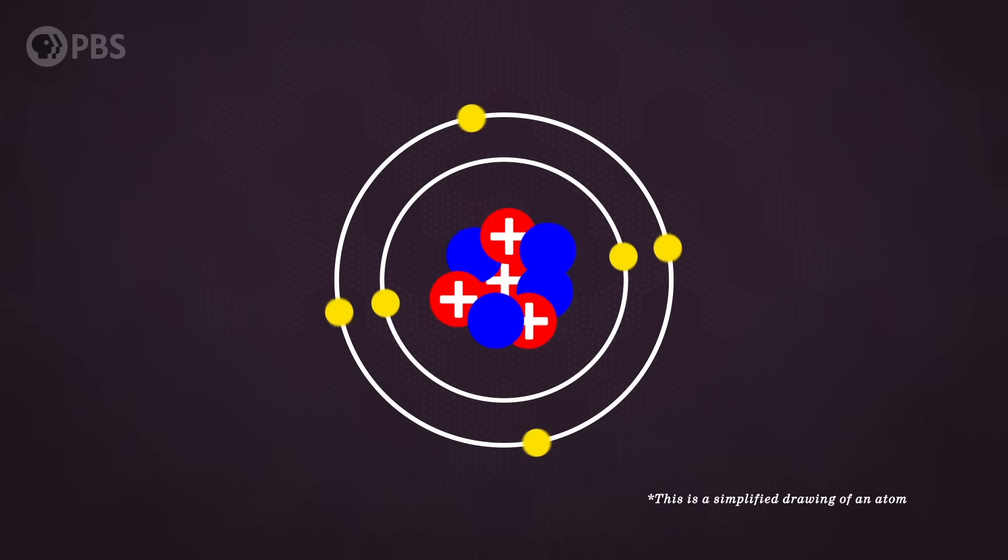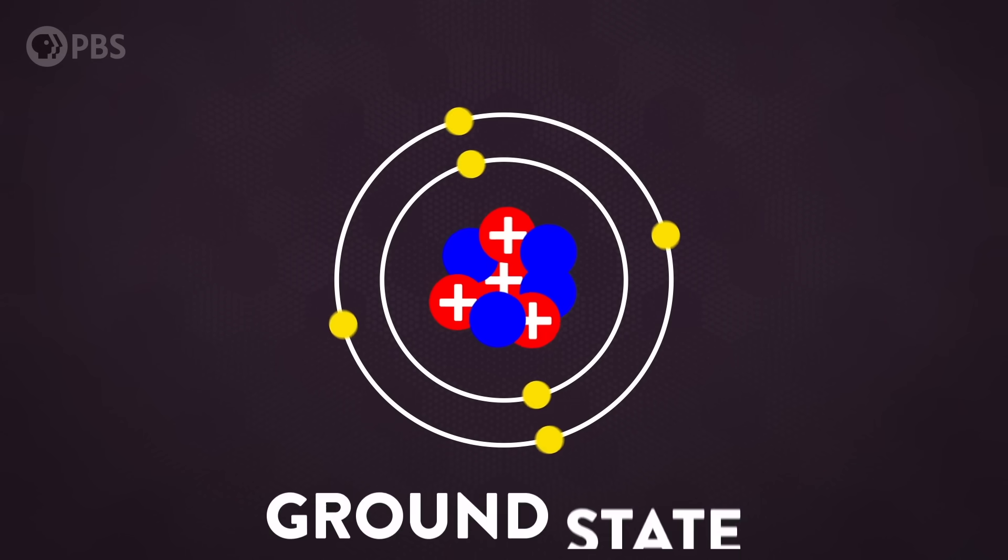Every atom has a nucleus surrounded by some number of electrons orbiting around in different energy levels. Most of the time, these electrons sit in their lowest possible energy level, what's known as the ground state.